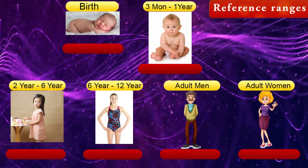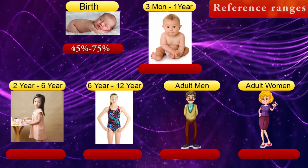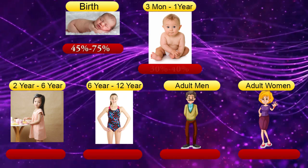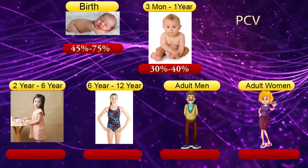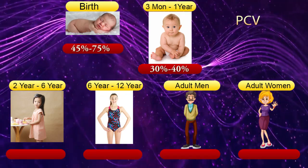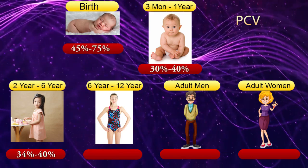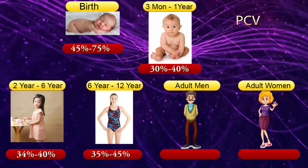Packed cell volume reference ranges. At birth: 45–75%. From 3 months to 1 year: 30–40%. From 2 to 6 years: 34–40%. From 6 to 12 years: 35–45%.